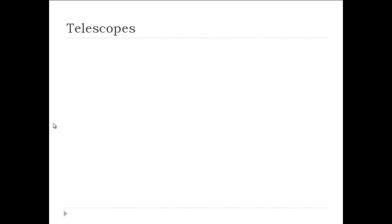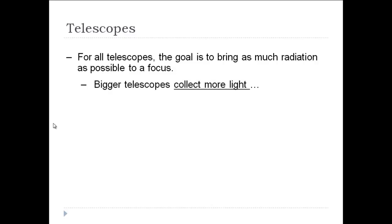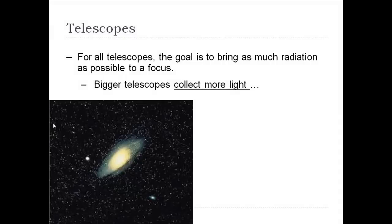First, let's quickly wrap up some of the stuff that we didn't do with telescopes. Again, we mentioned last time that all telescopes, the main goal is to bring as much light to focus so that we can see very, very faint objects. For example, a small telescope looking at this, the Andromeda galaxy, you can see the central part, it's very bright.